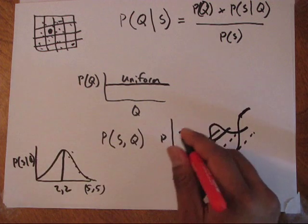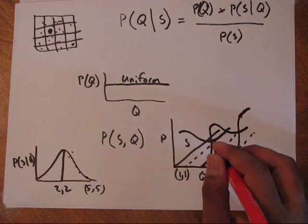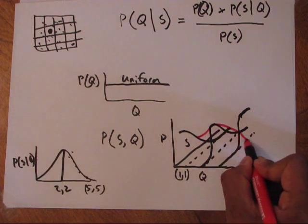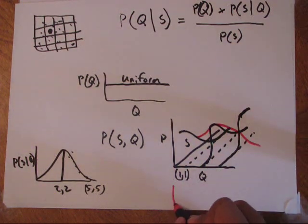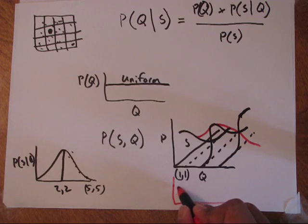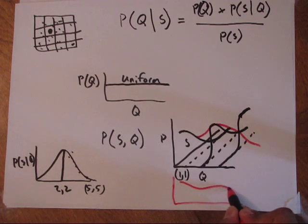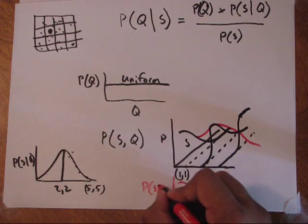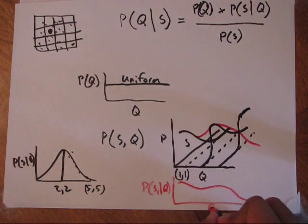And then when we get a particular squawk, we can again just grab out this curve. And if we pull that out, it'll look something like this, maybe like a high little bump like that. And that would be our probability of a particular squawk condition on all possible states.